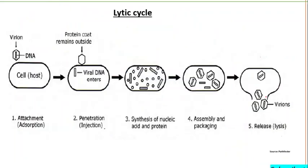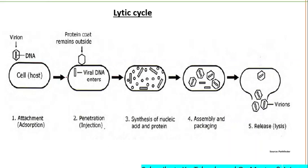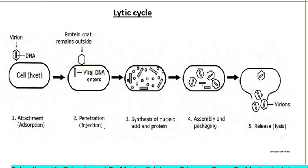Now let's discuss the life cycle of bacteriophages. All phages undergo a specific set of reactions to replicate. The phage must first recognize a bacterium, then multiply by binding to it, form its own proteins, and cause lysis of the bacterial genome. There are two different types of viral cycles: the lytic cycle and the lysogenic cycle.